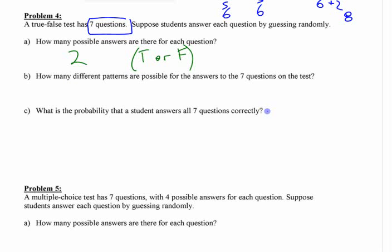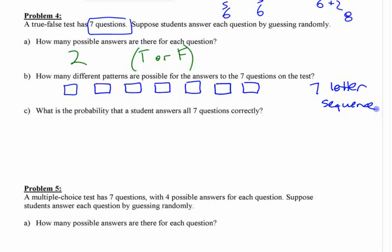If there's seven different questions that each have a choice of what they can be, before you try to answer it quickly, think about - here's your seven things. It's sort of like a seven digit, not number, but a seven digit or seven letter sequence, right? It's a seven letter sequence. The answer key. How many different patterns are possible?